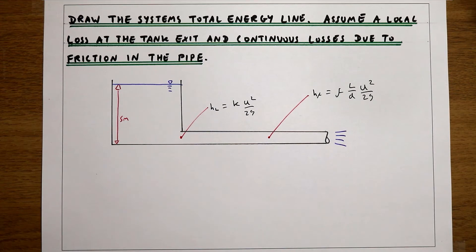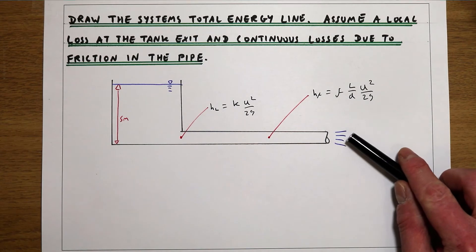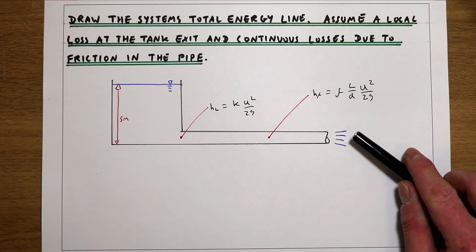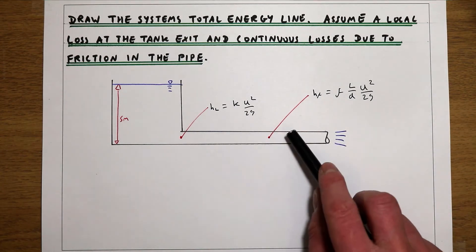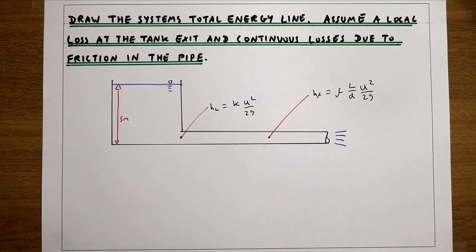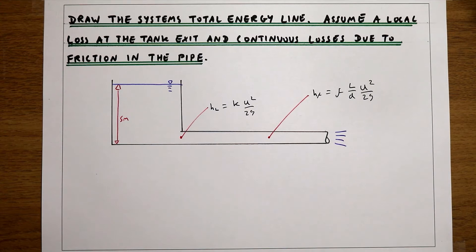This is an example we've looked at in the two previous videos. We started out by working out the velocity coming out of this pipe, then we looked at how to work out the pressure in the pipe, and now we're going to think about what's happening to the energy as we move through the system. We're not actually going to work out any values in this video — we're just going to think about what's happening to the energy.